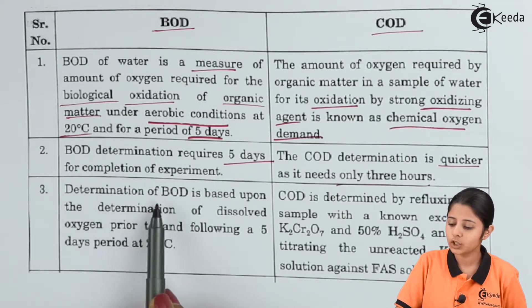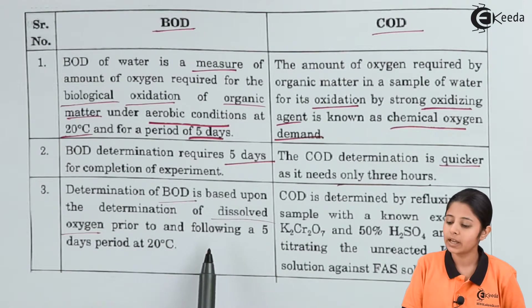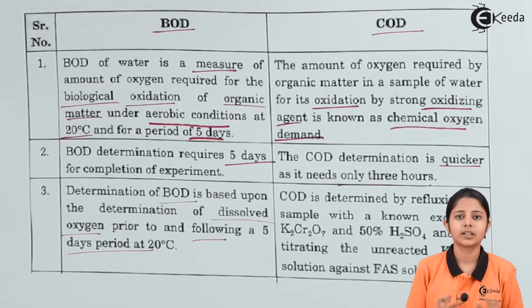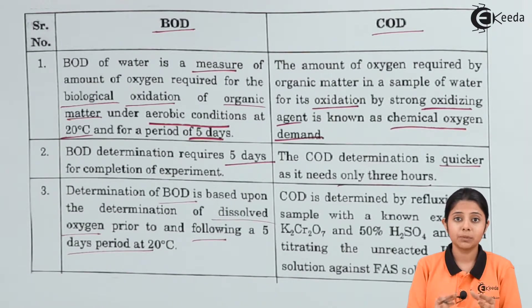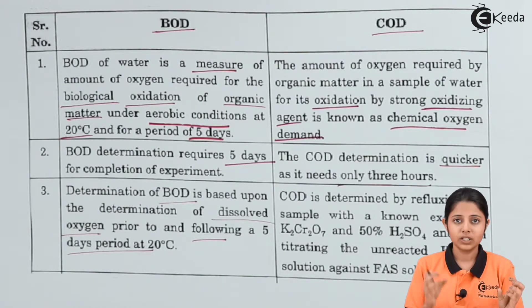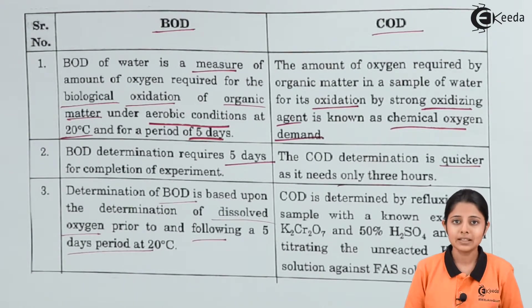Point number 3: determination of BOD is based upon the measurement of dissolved oxygen prior to and following a 5-day period. I will take my water sample which contains some aerobic bacteria, keep it for 5 days, test the amount of oxygen present before and after those 5 days. The difference between the oxygen measured prior to and after 5 days will tell me the amount of oxygen which was taken away by the bacteria. And this is my BOD value.